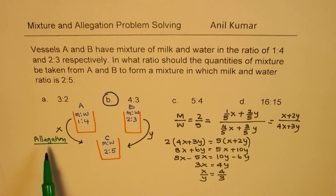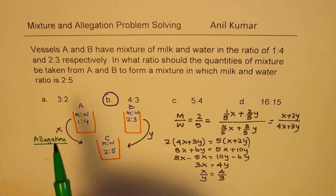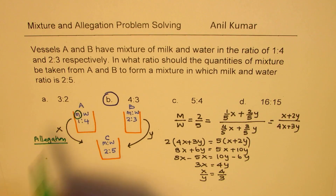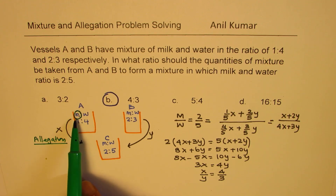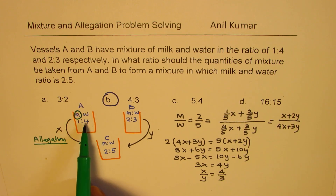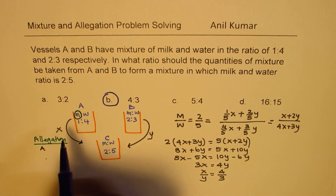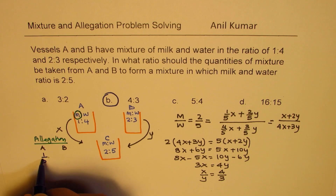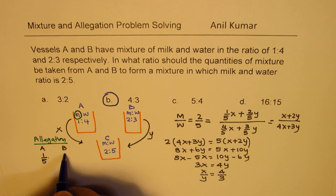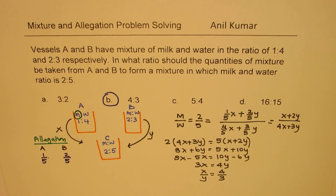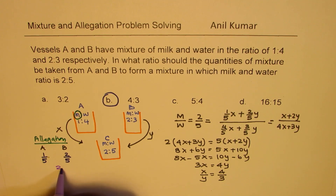In the allegation method, we focus on one thing — let us focus on milk itself. As far as A is concerned, the ratio of milk is 1 to 4, meaning 1 out of 5. In B, the milk is 2 out of 5. And when we do the combination in C, we need 2 out of 7, since 2 plus 5 is 7. So the required concentration in C is 2 out of 7.